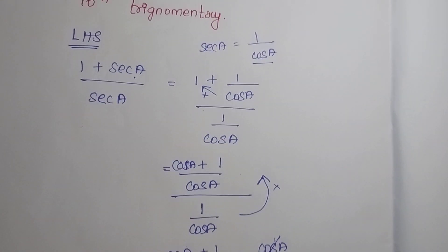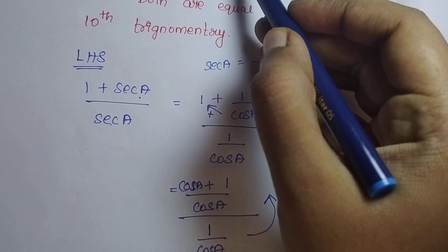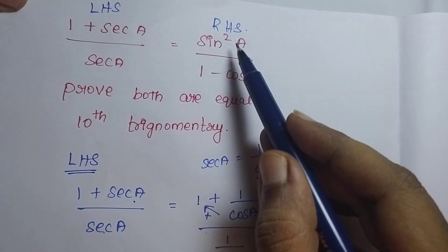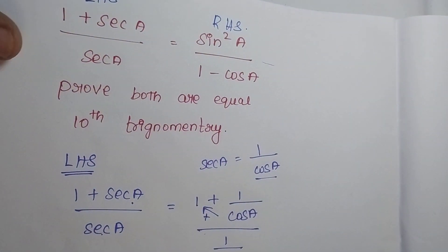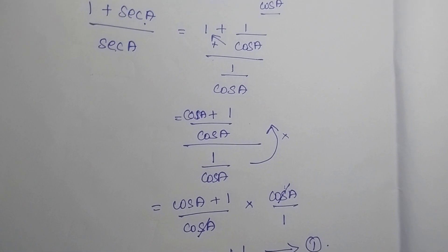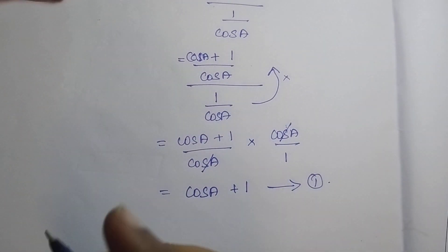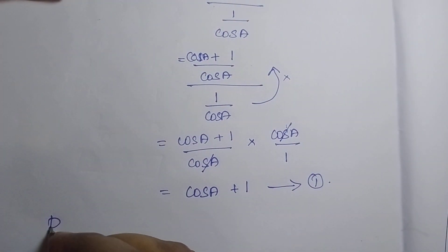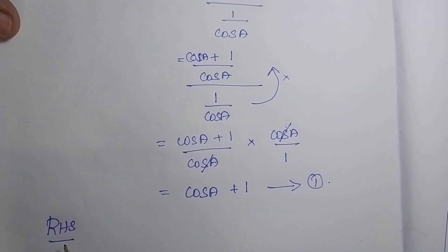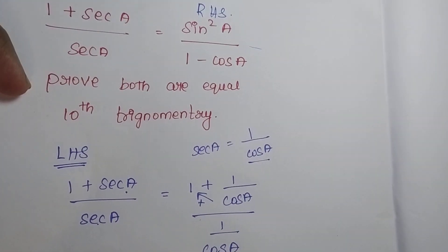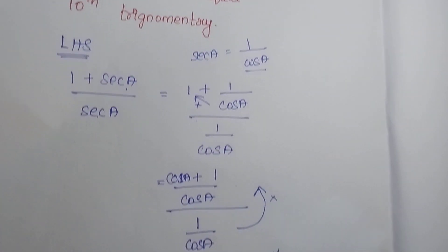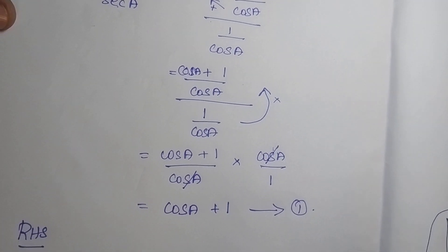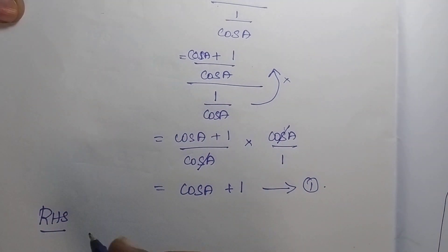Now I am going to take RHS to make both the same. So I am going to solve the RHS. RHS is equal to — the equation is sin square A divided by 1 minus cos A.